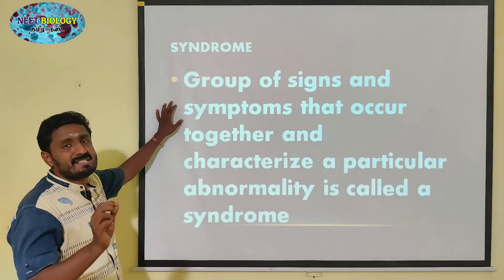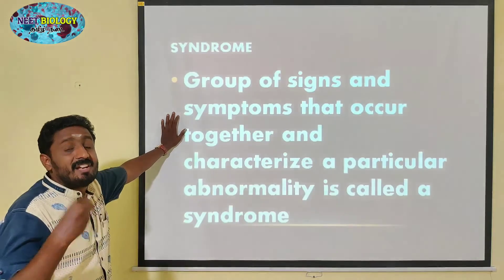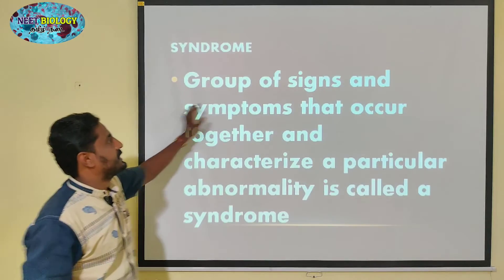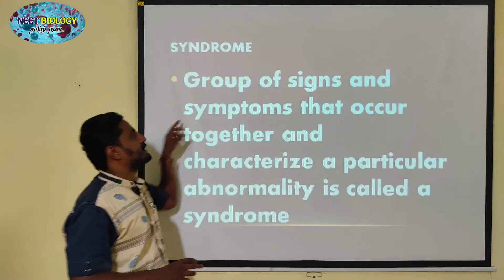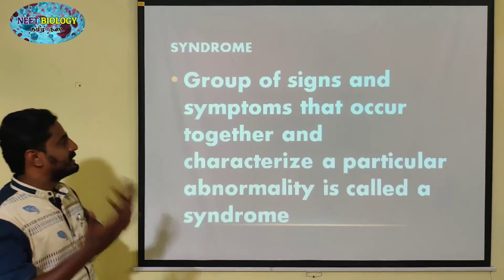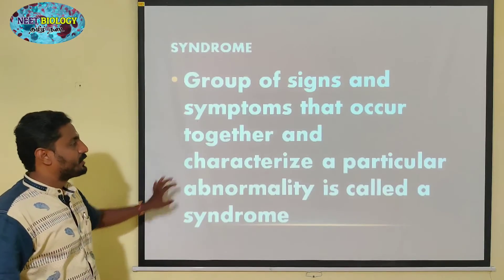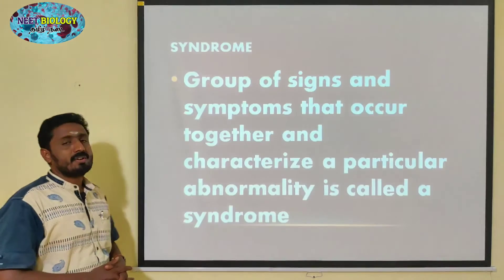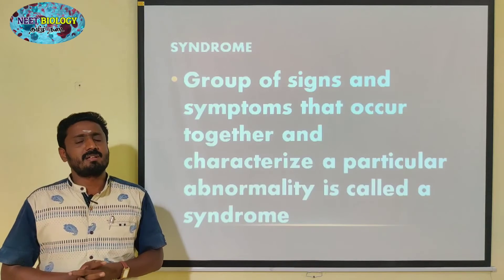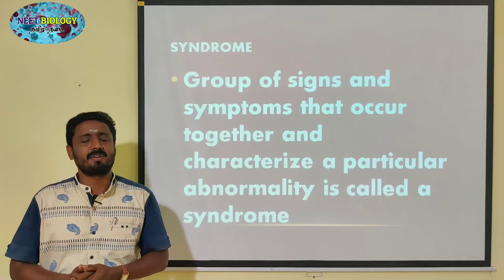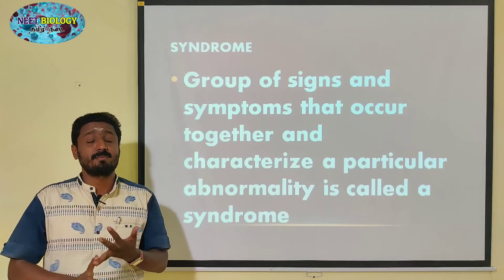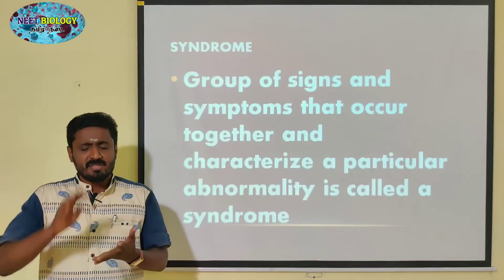A group of signs and symptoms that occur together and characterize a particular abnormal condition is called a Syndrome. Examples of chromosomal syndromes include Klinefelter Syndrome, Down Syndrome, and Patau Syndrome.